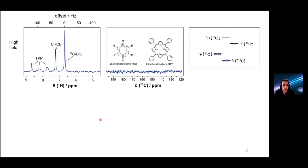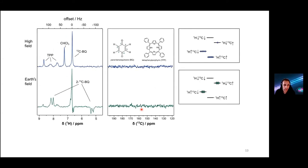Here is thermal equilibrium spectrum of the sample at our benchtop NMR. We see proton signals from porphyrin, benzoquinone, and chloroform. We used deuterated chloroform. We couldn't see any signals in carbon-13 channel because of the low concentrations.